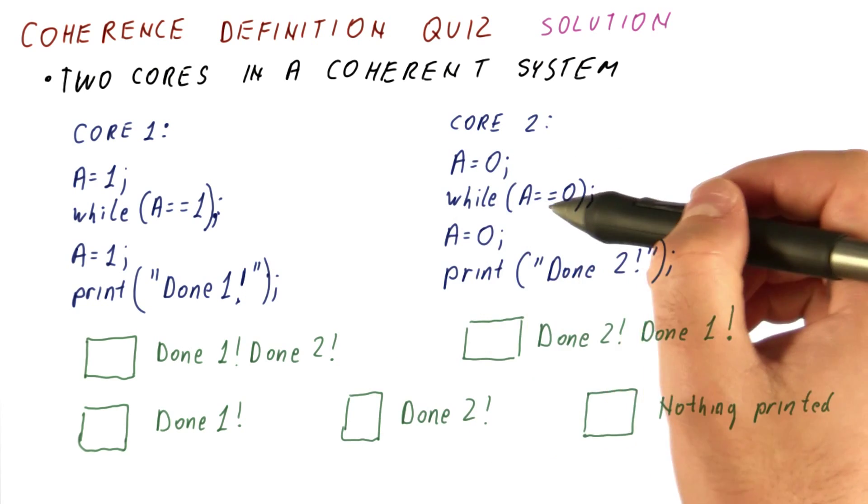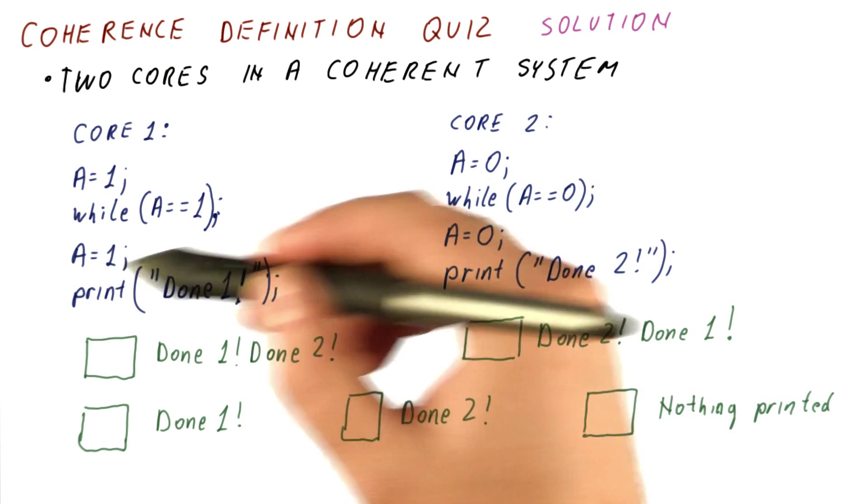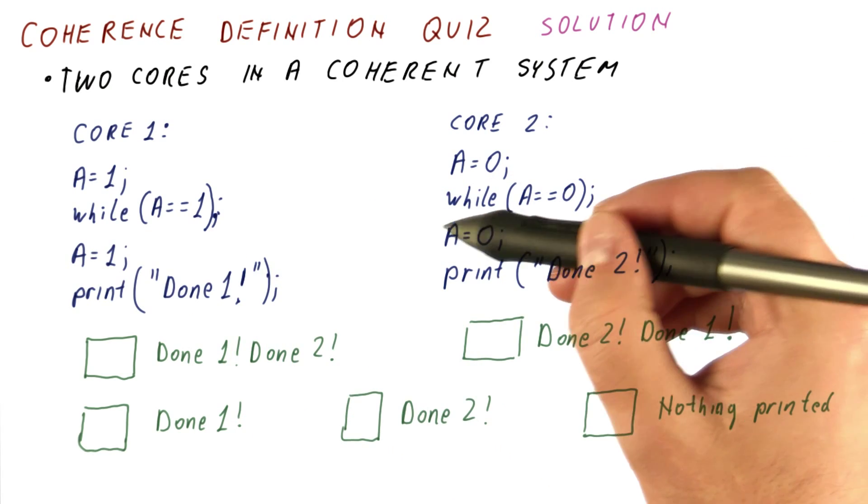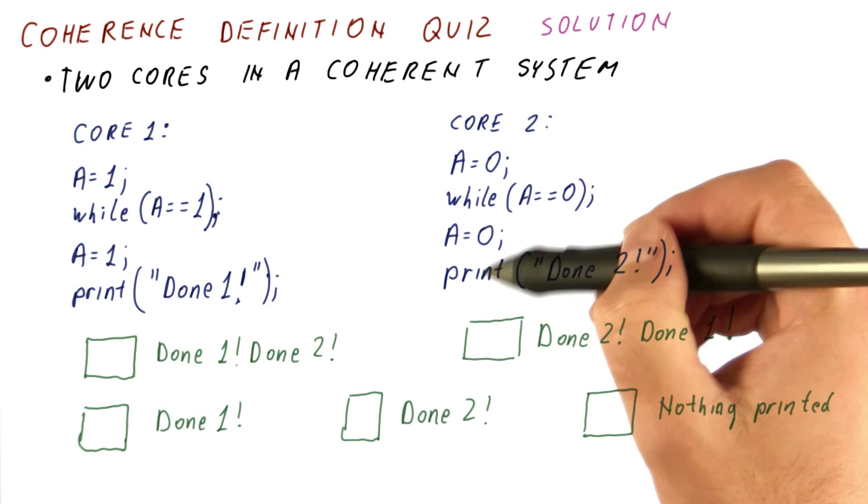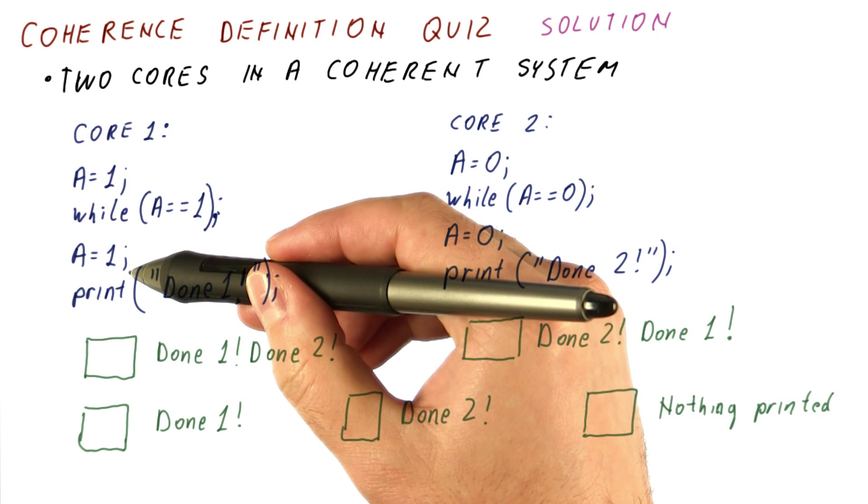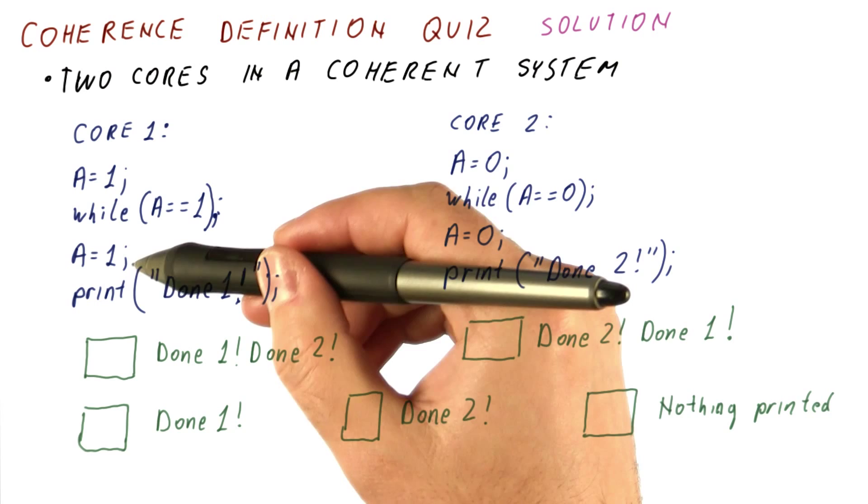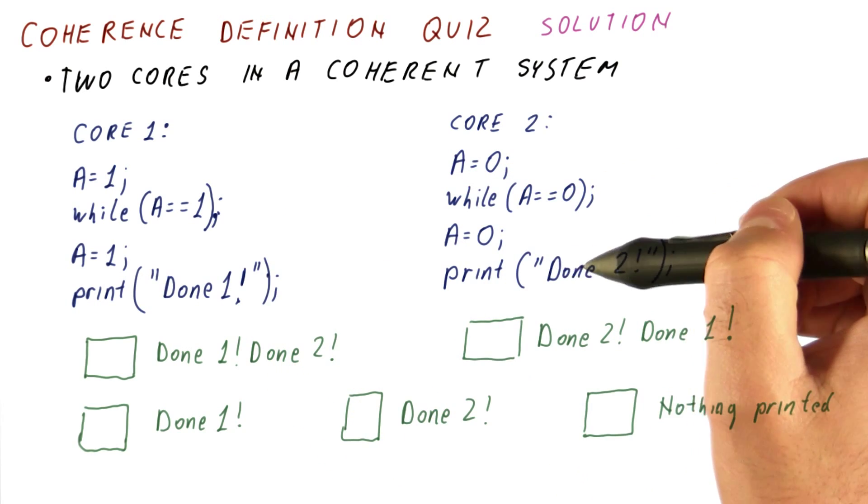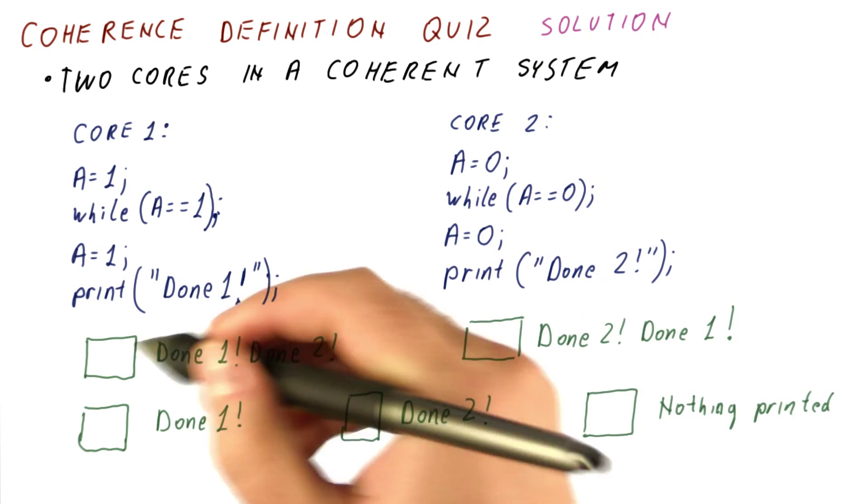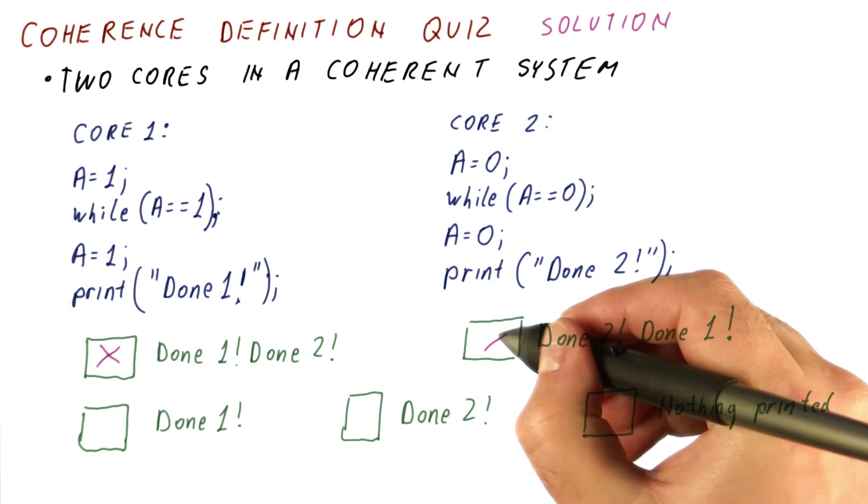So what then happens is core one, when it sets this, releases core two. Now core two can do this and this first, while core one is still being delayed here. Or it can be that core one gets here first, and then core two gets here. So definitely, these two outcomes are possible.